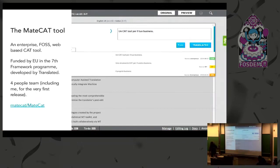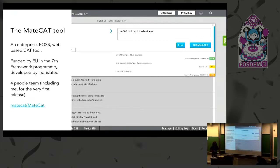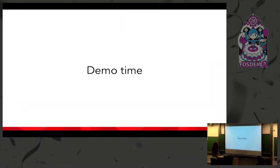Today our CAT tool of choice is MateCAT. MateCAT is an enterprise-grade, completely free and open source web-based CAT tool. It was funded by the European community in the seventh framework program. It cost three million euros and two and a half years to develop, starting with a four-person team. It's open source on GitHub and is evolved and operated as a service by Translated, the company that took the tender to develop this technology.